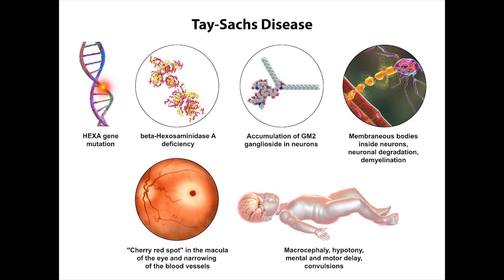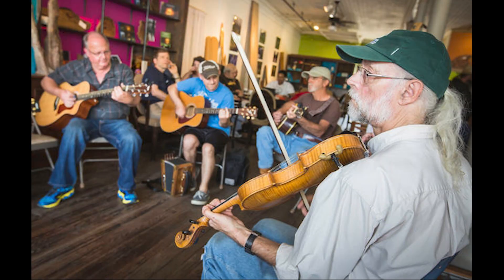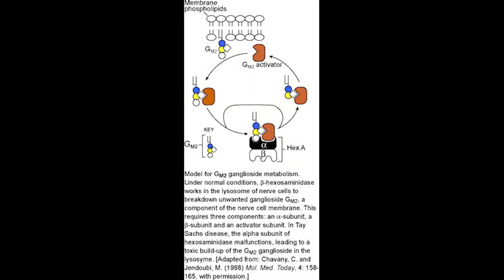Tay-Sachs disease is a heritable metabolic disorder commonly associated with Ashkenazi Jews, but has also been found in the French Canadians of southeastern Quebec, the Cajuns of southwest Louisiana, and other populations throughout the world. The severity of expression and the age at onset varies from infantile and juvenile forms that exhibit paralysis, dementia, blindness and early death, to a chronic adult form that exhibits neuron dysfunction and psychosis.